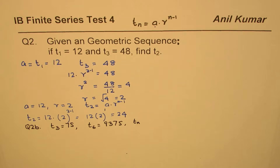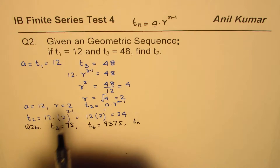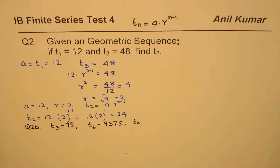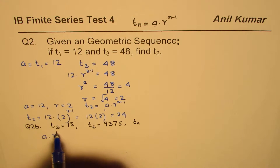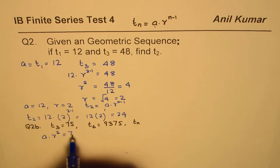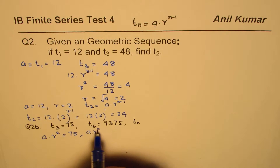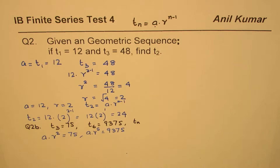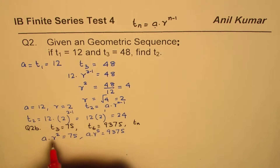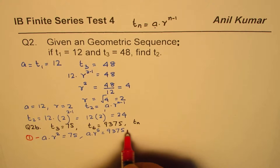The concept is similar. For t3 equals 75, using the formula we write: a times r to the power of 3 minus 1, which is r squared, equals 75. That is equation 1. For t6 equals 9375, we write: a times r to the power of 6 minus 1, which is r to the power of 5, equals 9375. That is equation 2. If we divide one by the other, we get rid of 'a' and can find r.